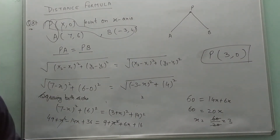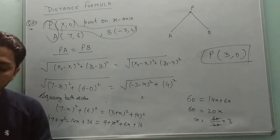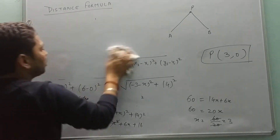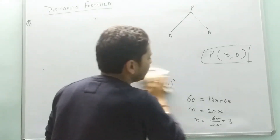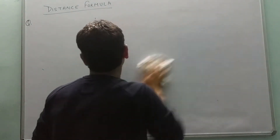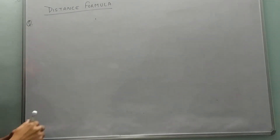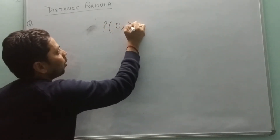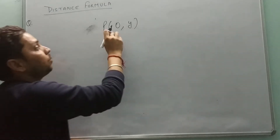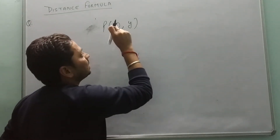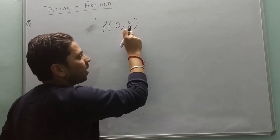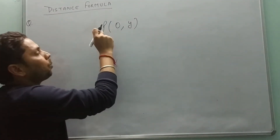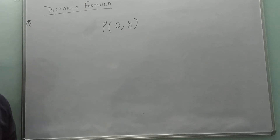Similarly, question number 9 is: find the point on the y-axis equidistant from two given points. Since the point is on the y-axis, x is 0 and y can have any value. So point P on the y-axis will be (0, y), where y is the variable.